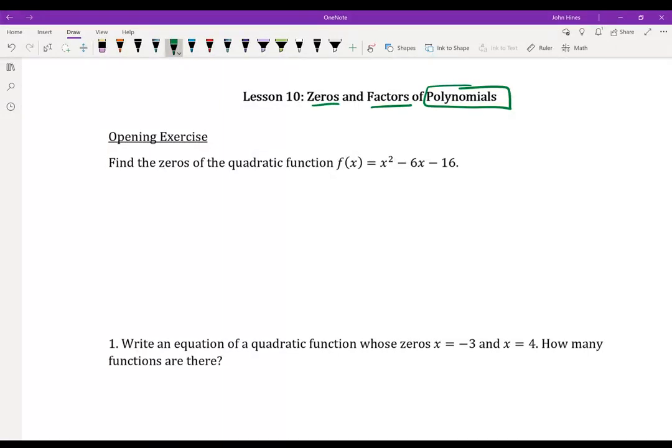So find the zeros of the quadratic function x squared minus 6x minus 16. Let's do this algebraically. Let's say x squared minus 6x minus 16 equals 0. Well, if I want to find the zeros, I'm going to factor this expression. So let's try factoring this expression.